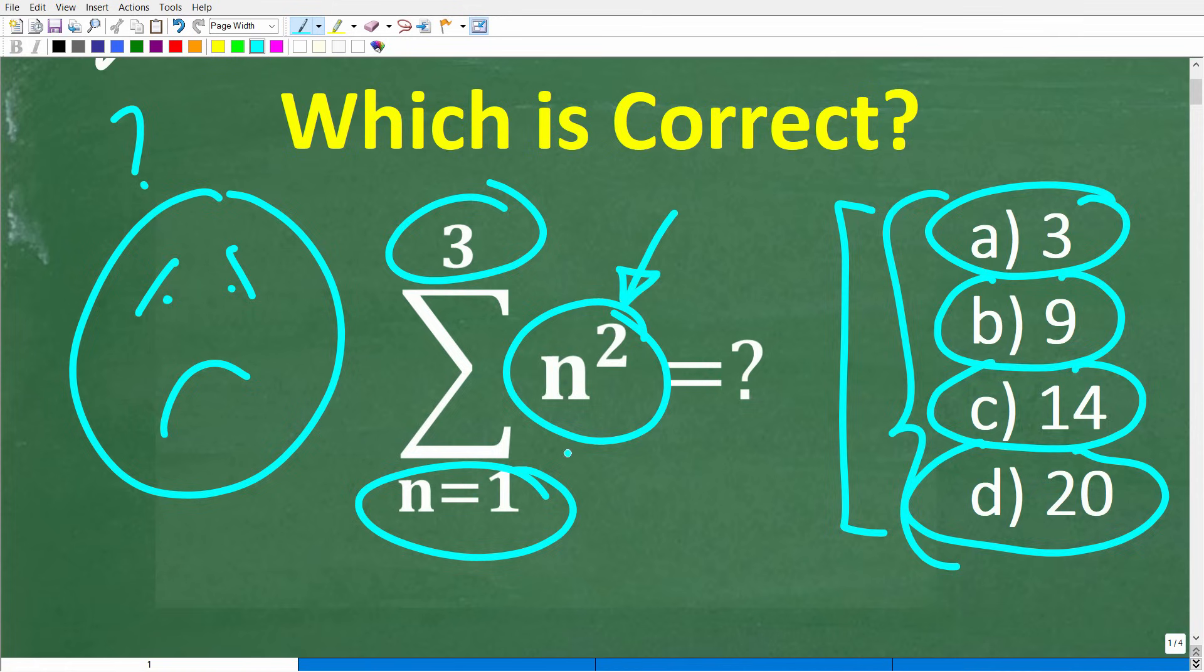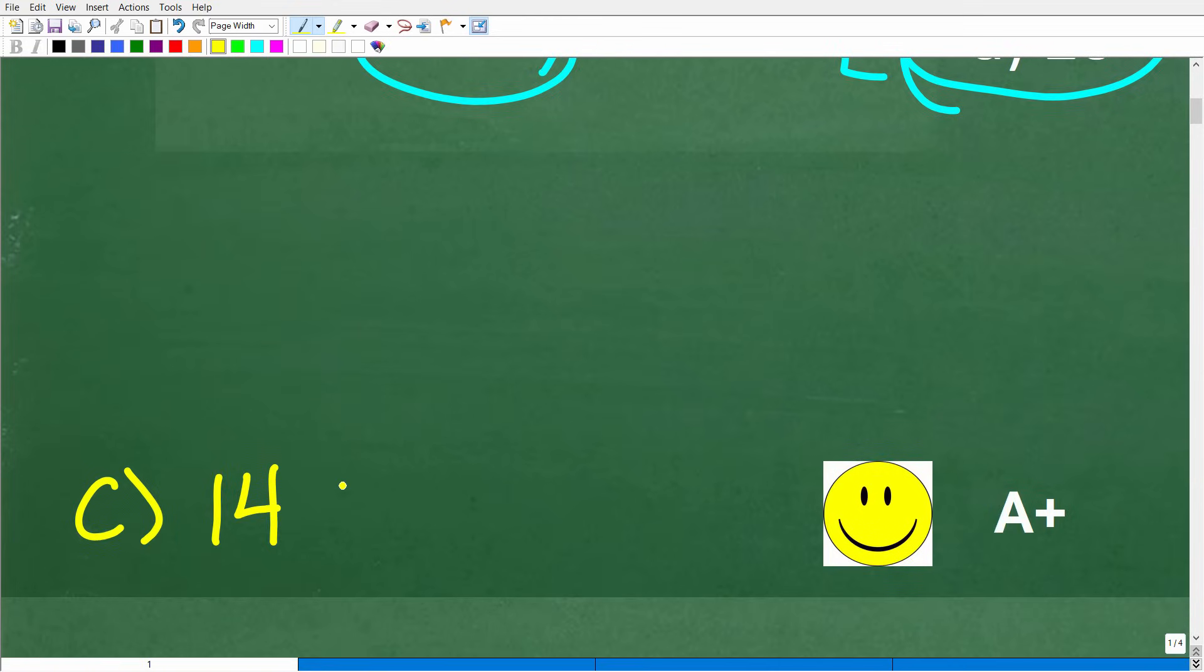We have n is equal to 1, so maybe we plug in at 1 and we square it, and then maybe we plug in at 3 and we square it. Well, if you played around with this enough, hopefully you came up with the correct answer, which is C, and of course, that is 14.